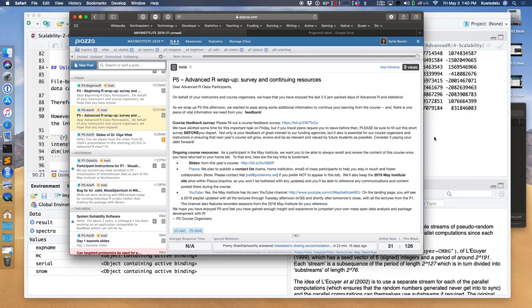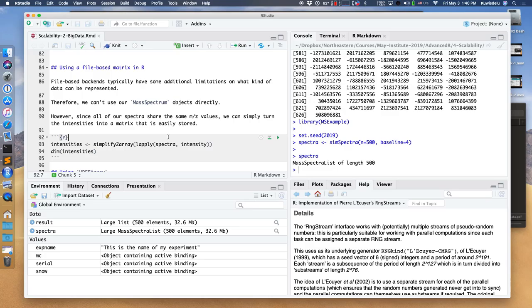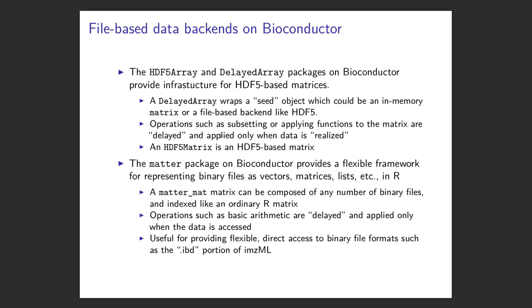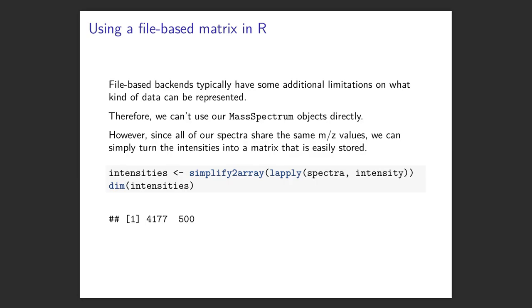So we'll see how much we're able to get covered. We still have a good bit of material left, so I might try to go a little bit faster at places. Please still feel free to stop me and ask questions. So where we left off, we had just talked about these packages, hdf5array and matter, that let us use essentially a file-based backend for working with large matrices in R. So now we're going to try a few examples to show how easy these are to work with.